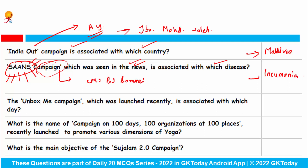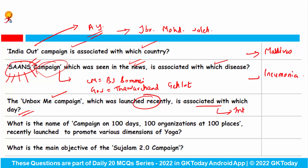The Governor of Karnataka is Thawarchand Gehlot. The Unbox Me campaign, which was launched recently, is associated with which day? This campaign is related to International Transgender Day of Visibility, which talks about the rights of transgender children. The campaign urges parents to identify the gender of their children as soon as possible.